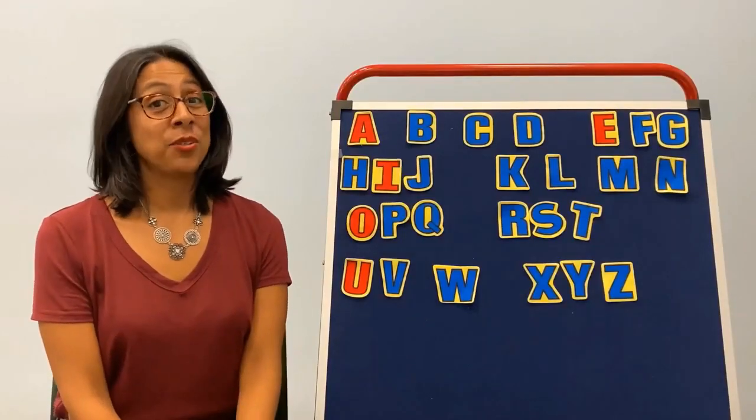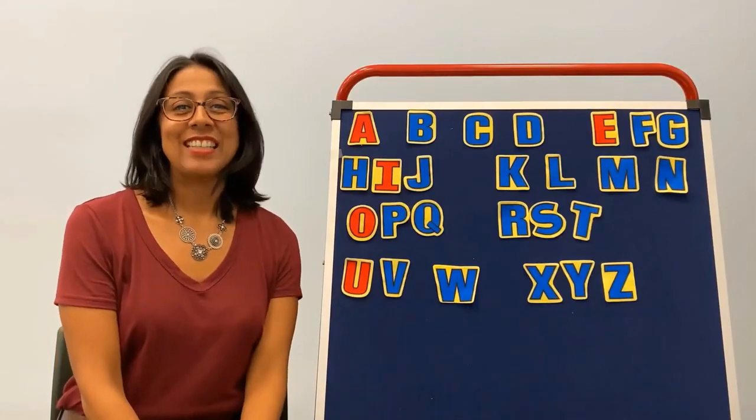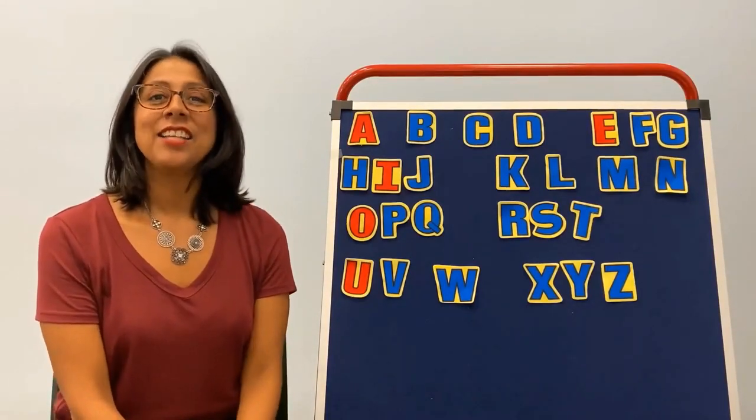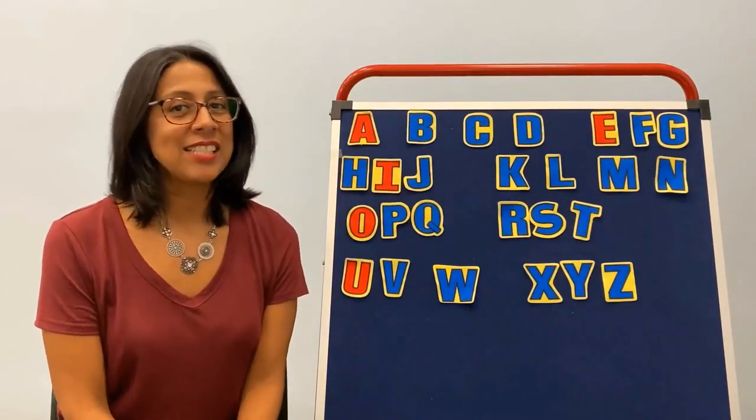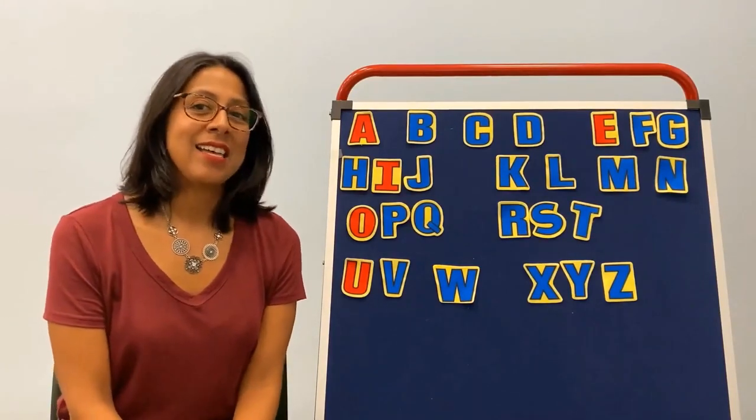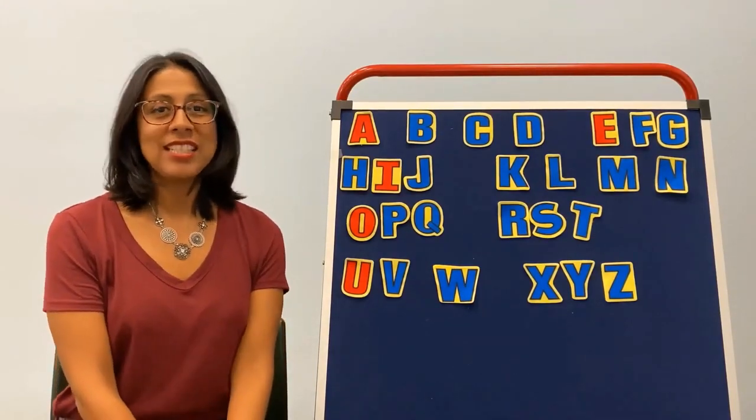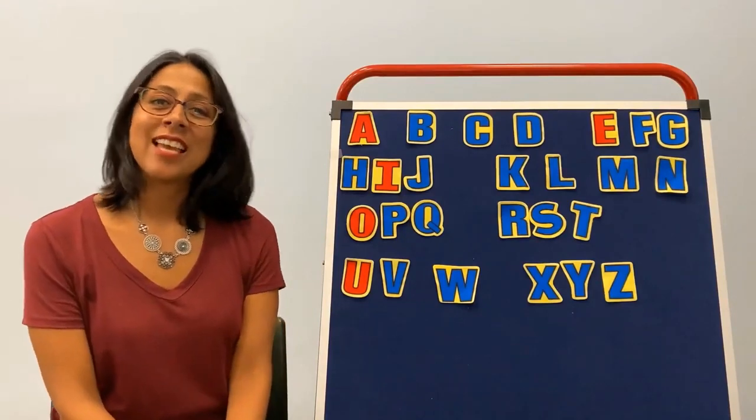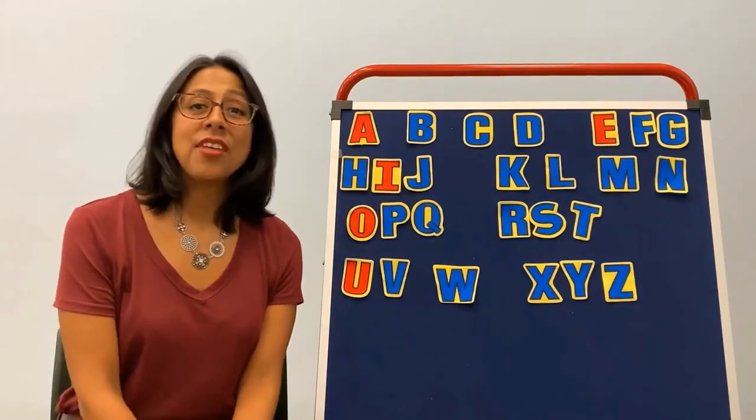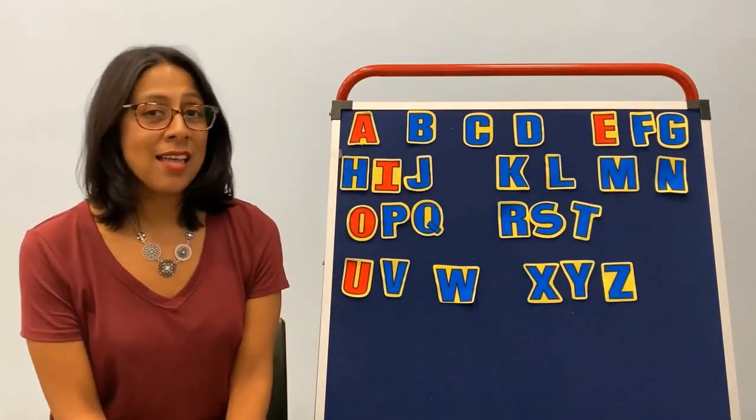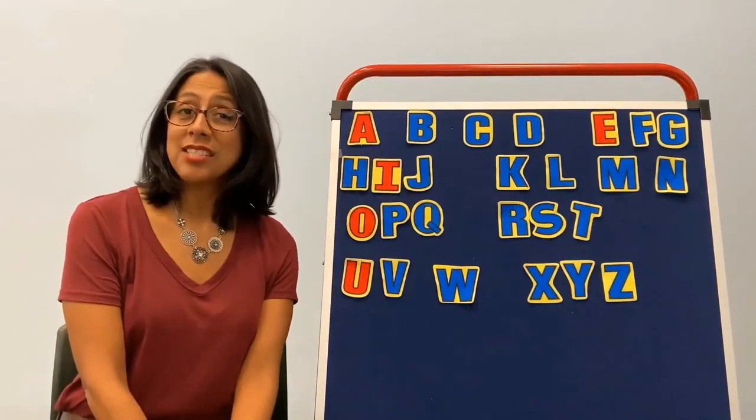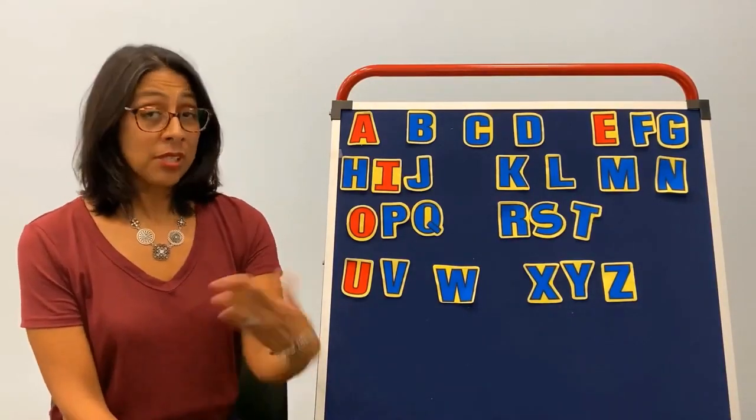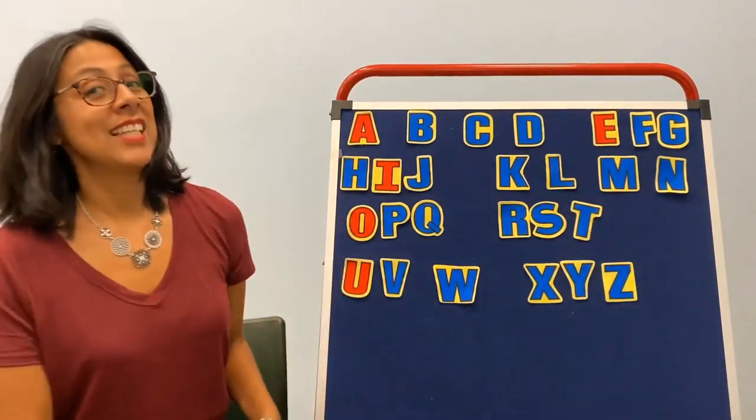You know the tune, Head, Shoulders, Knees, and Toes. Let's sing it. Head, shoulders, knees, and toes, knees, and toes. Head, shoulders, knees, and toes, knees, and toes. Eyes, and ears, and mouth, and nose. Head, shoulders, knees, and toes, knees and toes. So we're going to do the alphabet to that song. Let's try it.